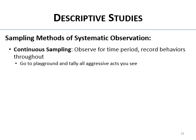Sampling methods are sometimes used because you're looking for quite specific behaviors and there are usually multiple subjects. Continuous sampling means you observe for a time period and record absolutely everything that happens. For example, going to a playground for an hour and tallying all the aggressive acts among kids. The problem is it gets complicated with multiple kids, so sampling methods can improve accuracy.